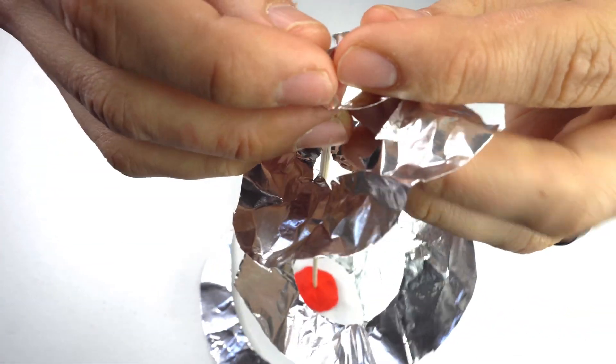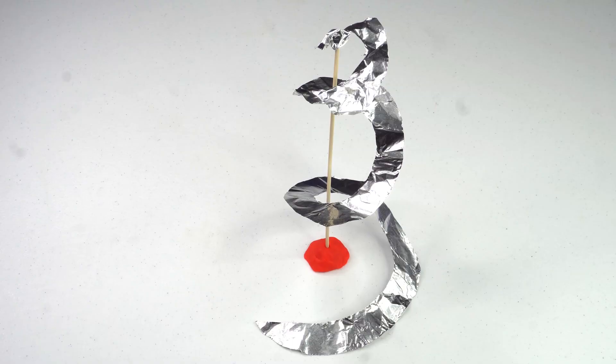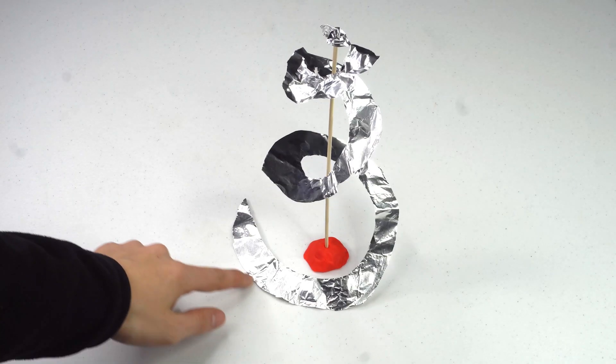Now this is very important: if you crimp that too hard, then your little spiral will not spin. So crimp it just enough so that the spiral stays on the skewer.